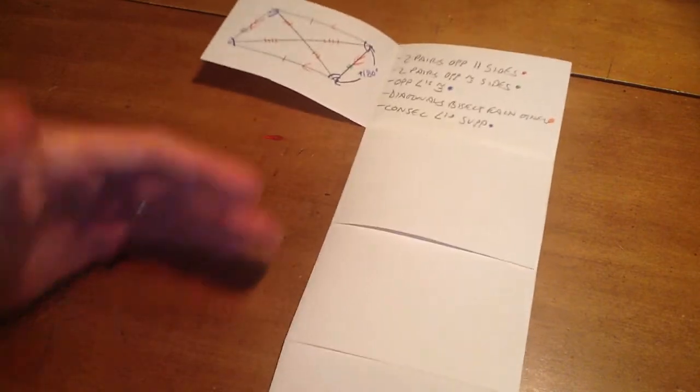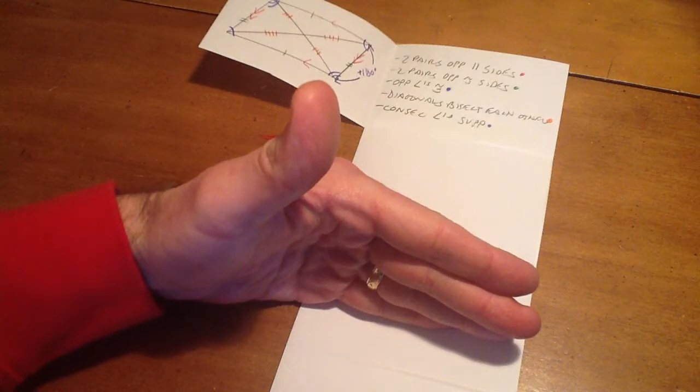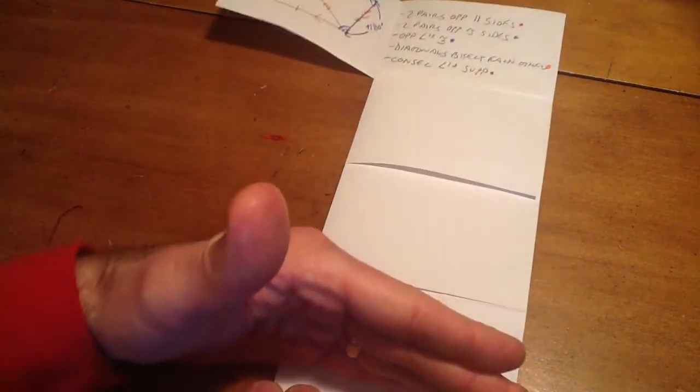Then on the other three flaps, take the second one and do the same thing for the rectangle. Then on the third one, the rhombus. And the fourth flap would be the square.